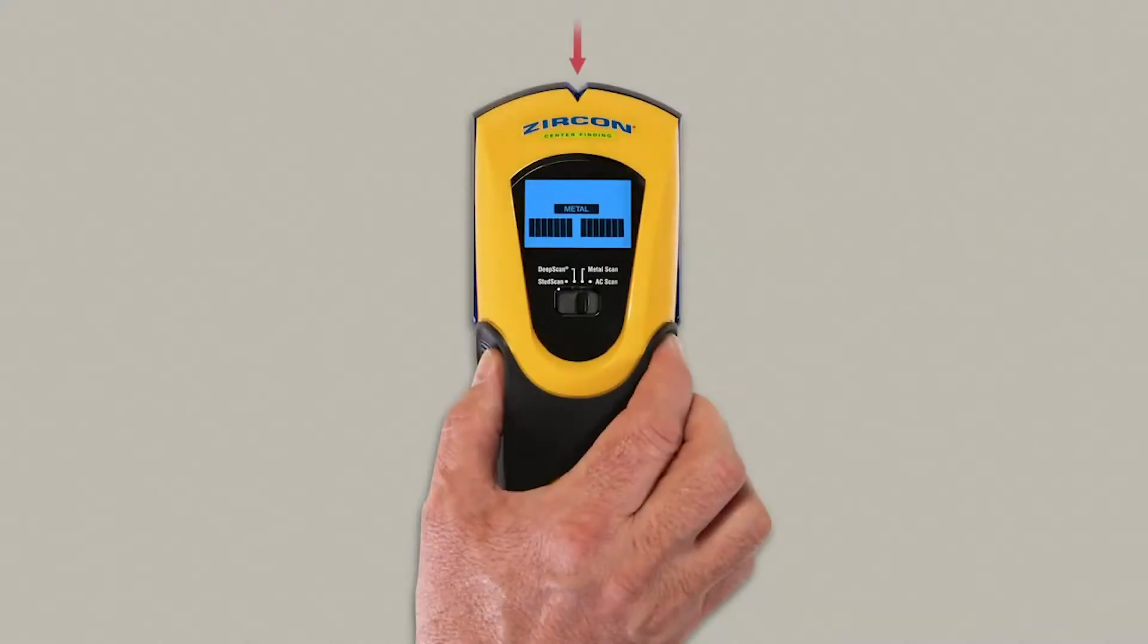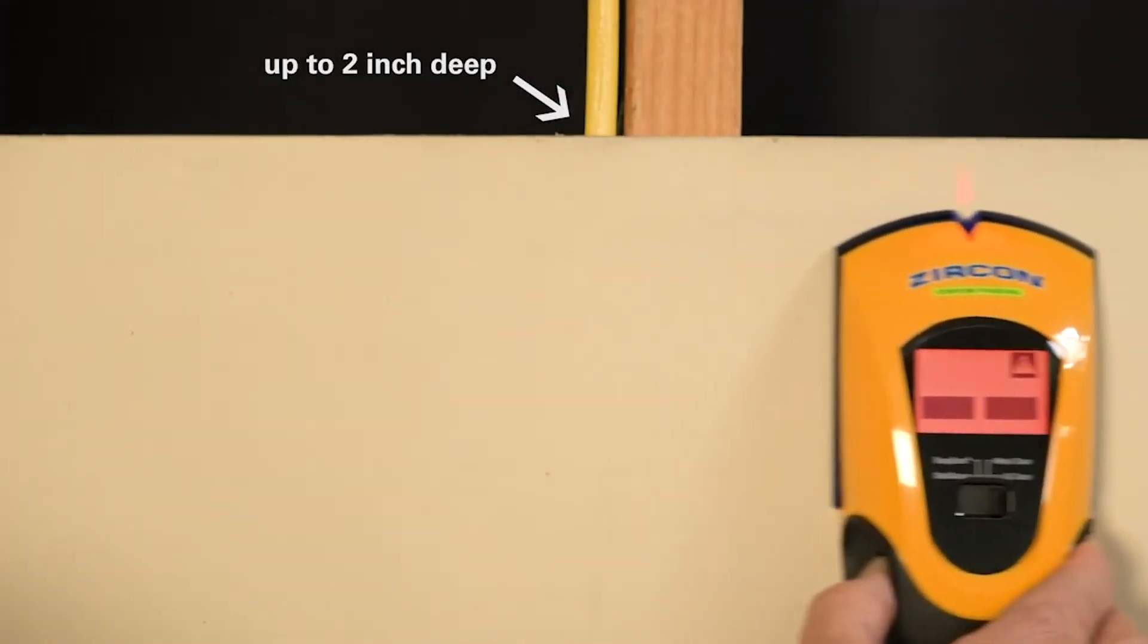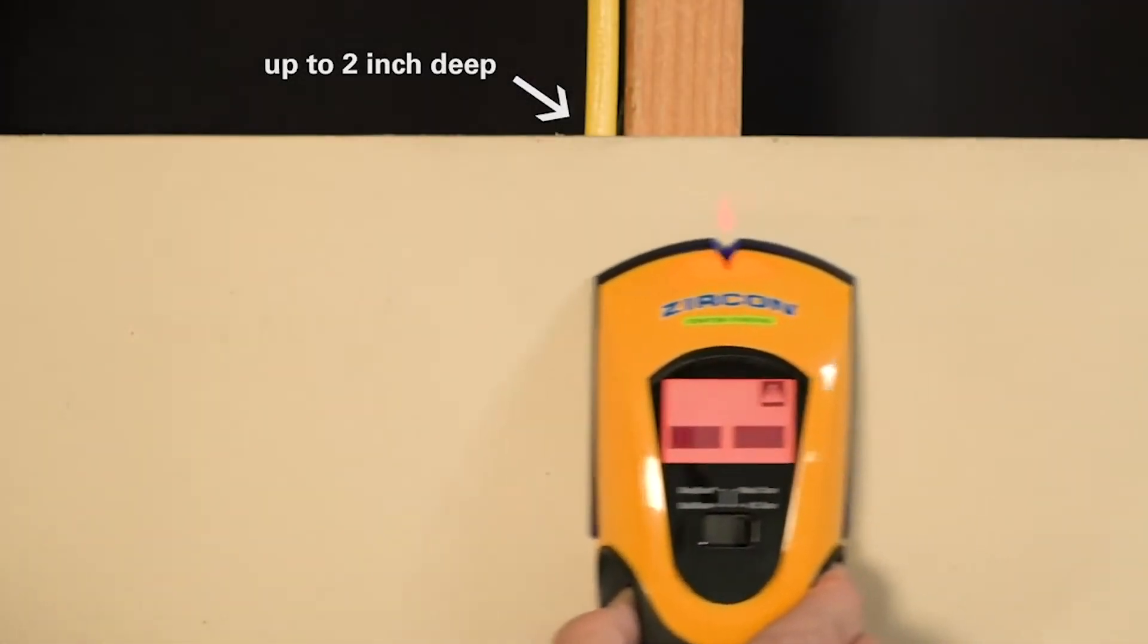Blue in metal scan to find metal up to 3 inches deep, and red in AC scan to find live unshielded AC electrical wiring up to 2 inches deep.